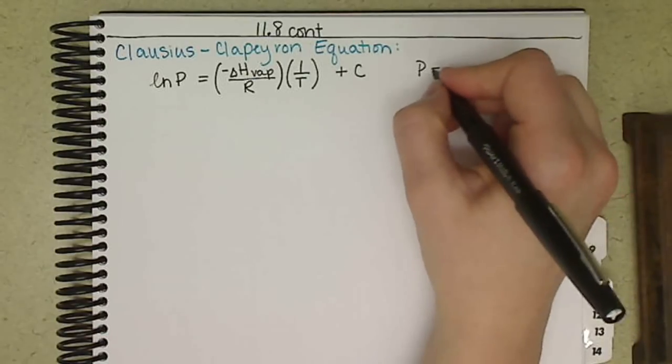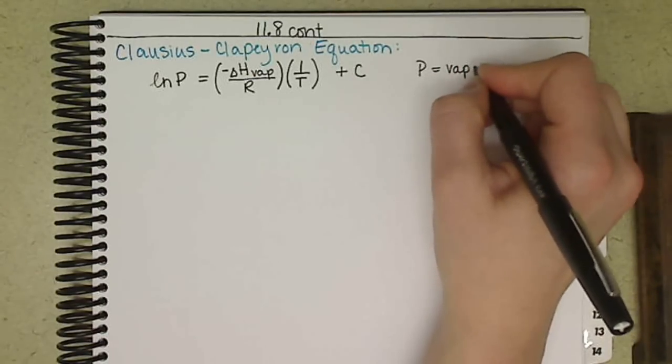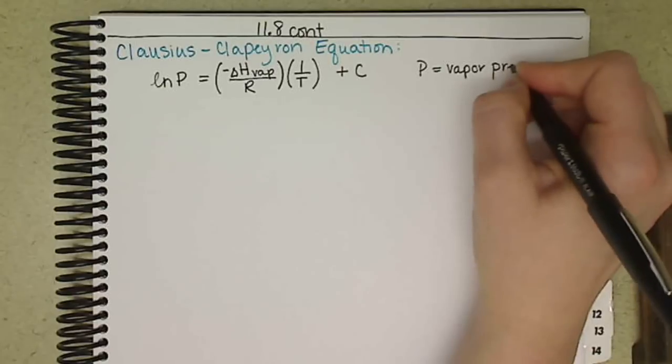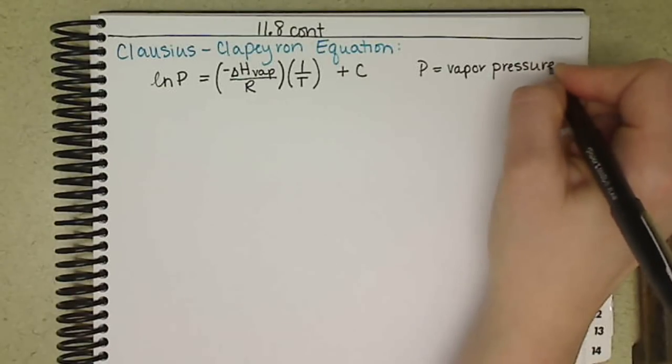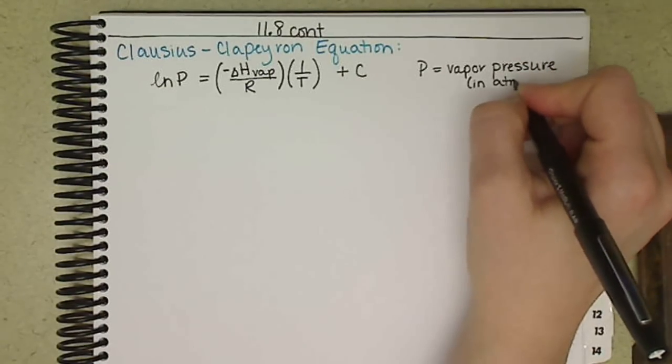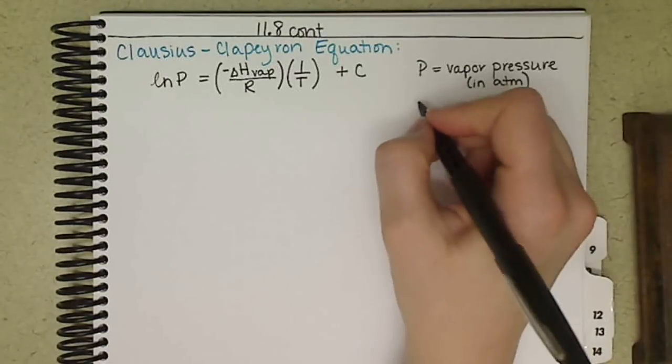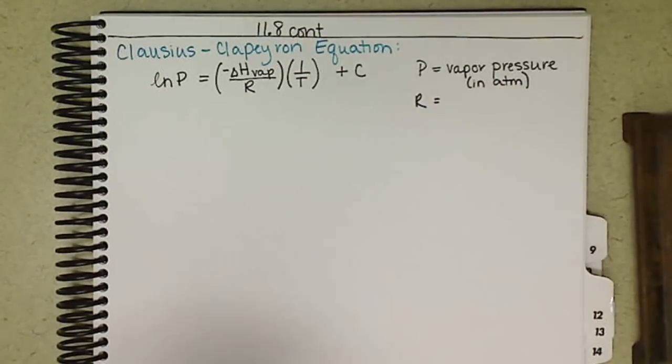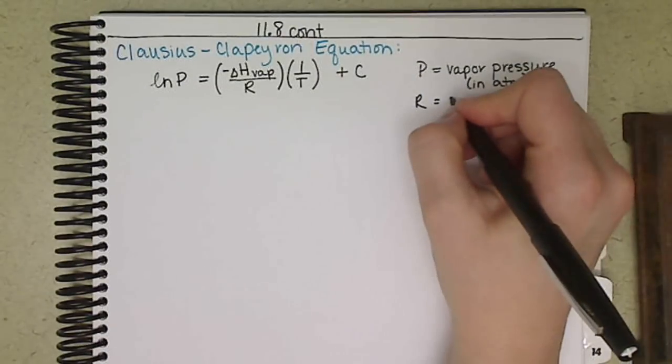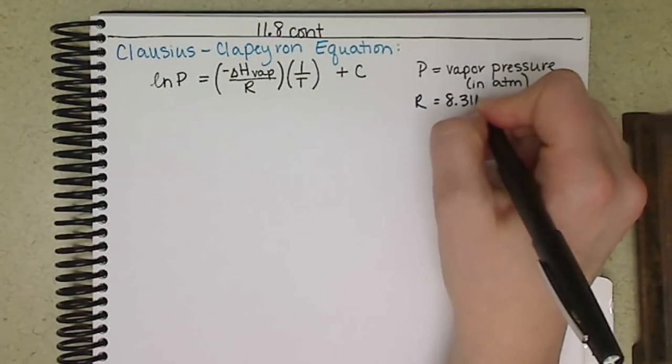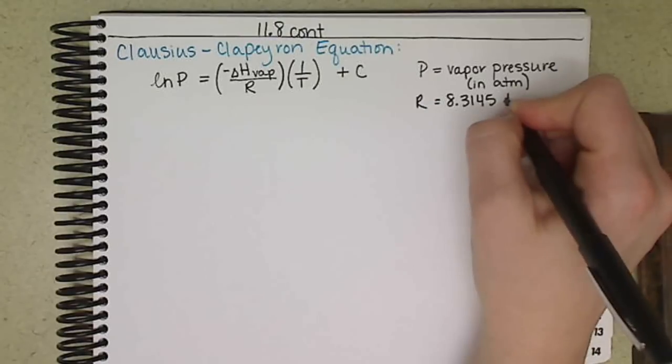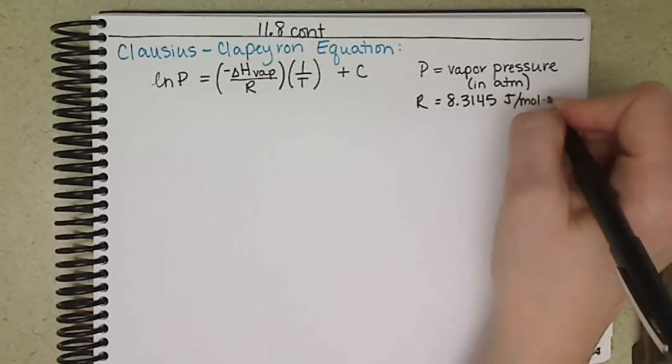So P is going to be the vapor pressure, and we want that in atmospheres. R is the gas constant, but we want the energy version of the gas constant, so we want 8.3145 joules per mole Kelvin.